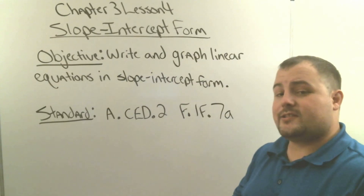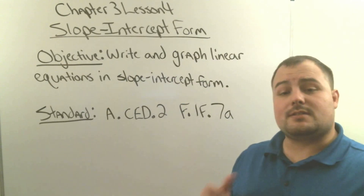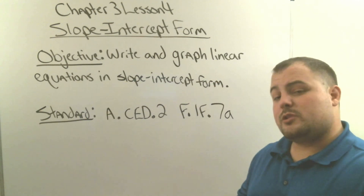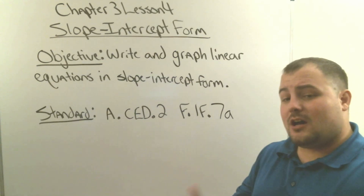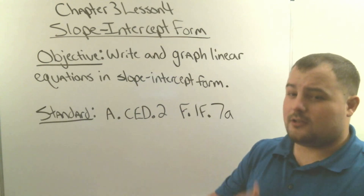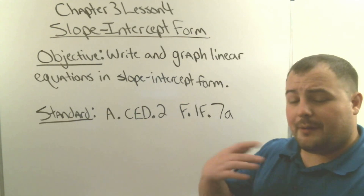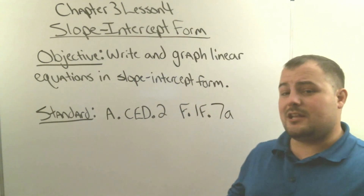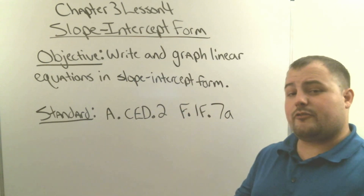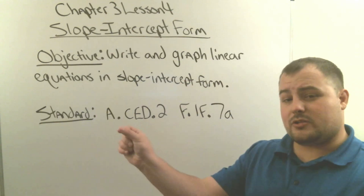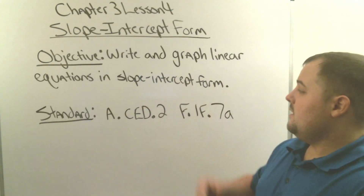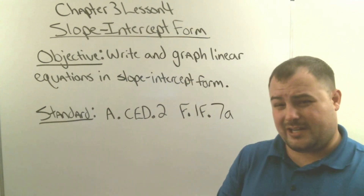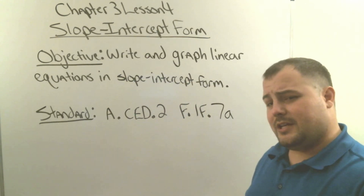Hey, Algebra 1. Welcome to Chapter 3, Lesson 4. In this lesson, we're going to talk about slope-intercept form. We've been looking at slope-intercept form a little bit when talking about how to graph and finding zeros. We looked at it in the very first lesson to graph a little bit in class too. Our objective is to be able to write and graph linear equations — equations that make a straight line — in slope-intercept form. Our standards are these two standards here. Make sure you copy those now.